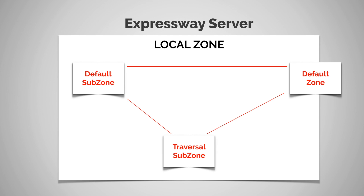What I can do is configure a pipe and then apply it to one of these links. So let's create a pipe and we'll call this pipe1. Pipes, just like with a subzone, control bandwidth on a total or per call basis. What's different about pipes is that with the per call option, you won't see the within or the in-out options like we did with subzones.